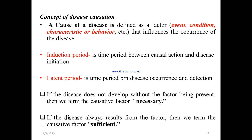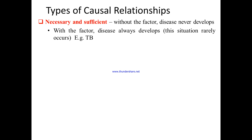The cause of disease is defined as a factor, event, condition, characteristic, or behavior that influences the occurrence of disease. The induction period is the time between causal action and disease initiation. The latent period is the time between disease occurrence and detection. If the disease does not develop without the factor being present, then we term that factor necessary. If the disease always results from the factor, we term that sufficient.